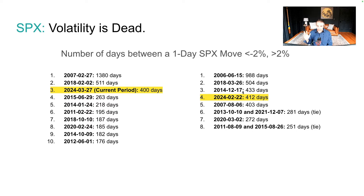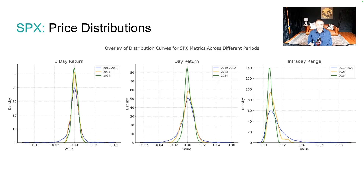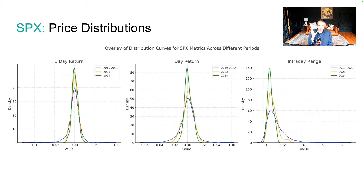Unusual calm, writ large — volatility is just dead. Looking at distributions from 2019 forward, which is really the start of the modern options environment when options volume picked up, you can see there are way fewer tails. Whether it's the close-to-close return, open-to-close return, or the intraday range shown in green, we just don't get tails anymore. The distribution is very tight now, very near to unchanged.